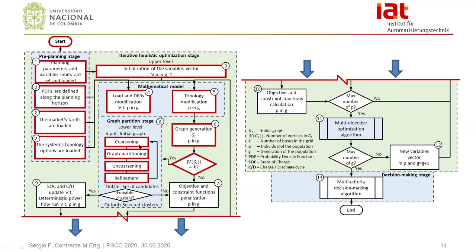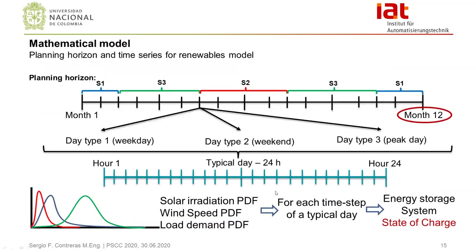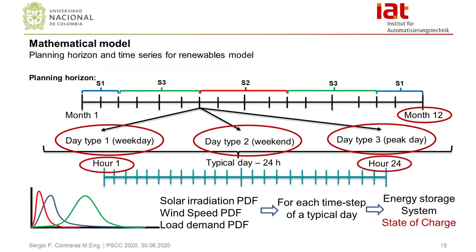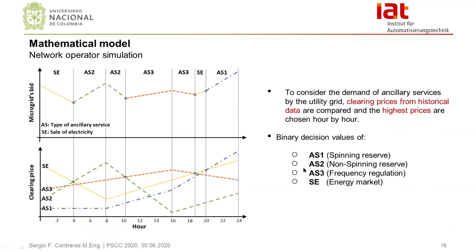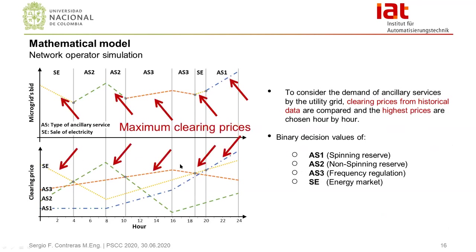This process is repeated iteratively to find — or not — a set of feasible clusters. If there are no feasible clusters, the objective functions are once more penalized in the upper level in step seven. But if feasible clusters are found, a deterministic power flow is run for each time step along the planning horizon to calculate the objective and constraint functions. The planning horizon is defined for one year with three typical days — weekday, weekend, and peak day — modeled for 24 time steps of one hour per day, and three days per month along the planning horizon. Per each time step, the charging or discharging cycle of the battery systems is also defined based on the state of charge. Additionally, a set of binary decision variables changes the conditions based on market clearing price signals for energy trading or ancillary services provision, defining the operation mode.